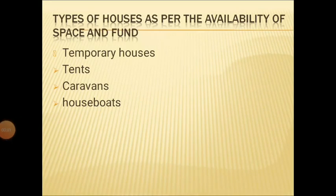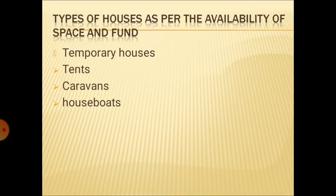After tents comes caravans — these are movable houses made on wheels. They move from one place to another on wheels. Earlier, these types of houses were pulled by animals like horses or bullock carts, but nowadays these houses are pulled by cars or trucks. These are temporary or movable houses which can be easily taken from one place to another.